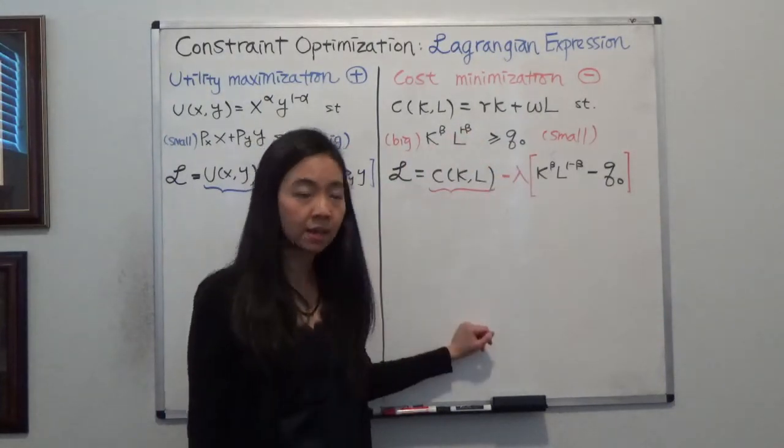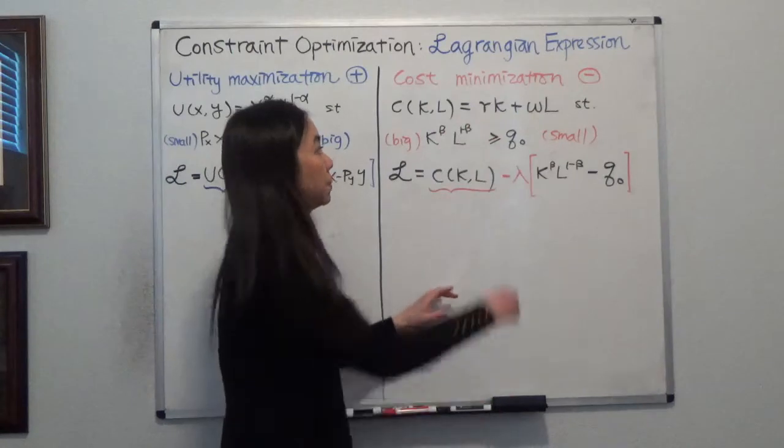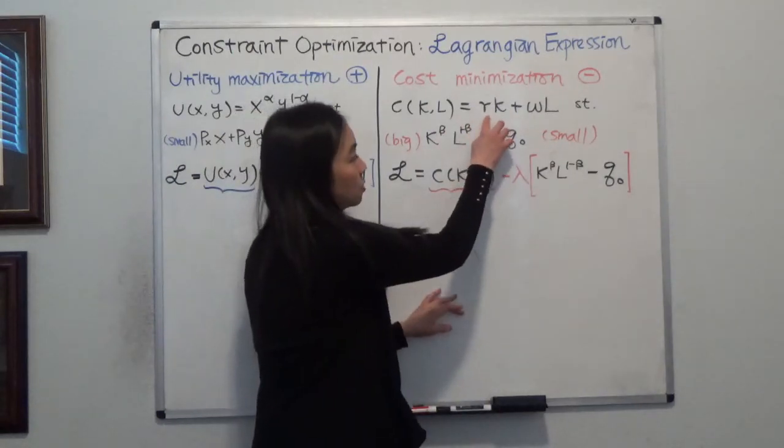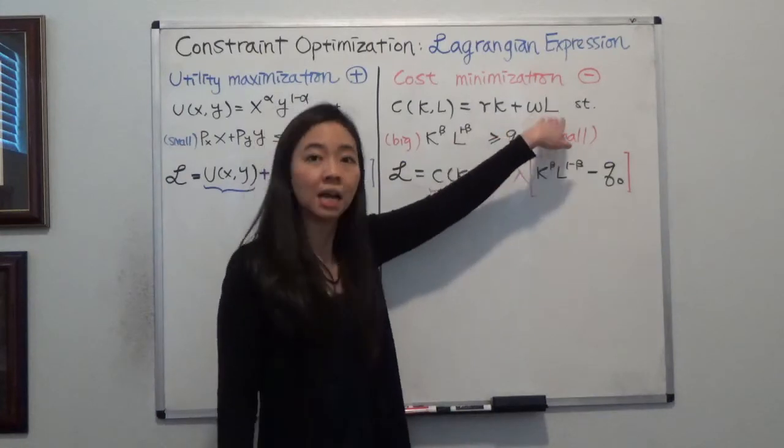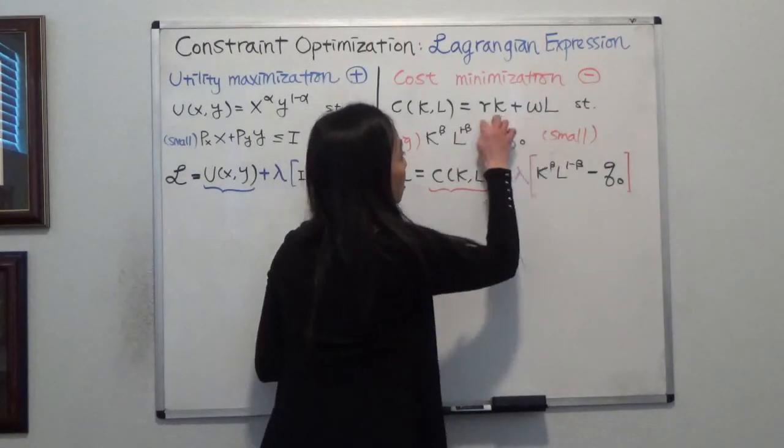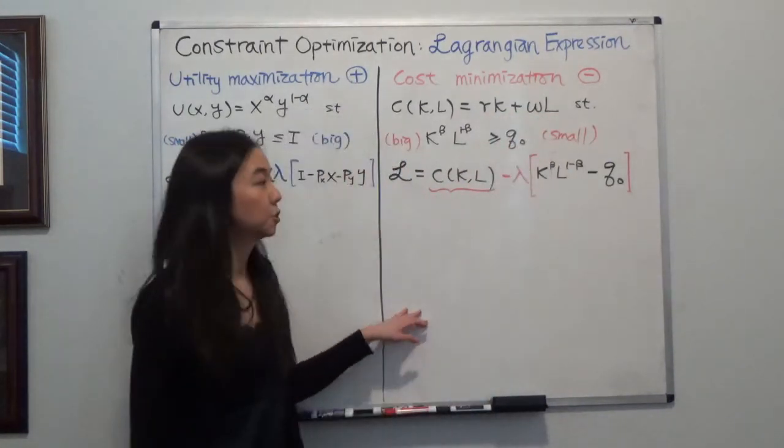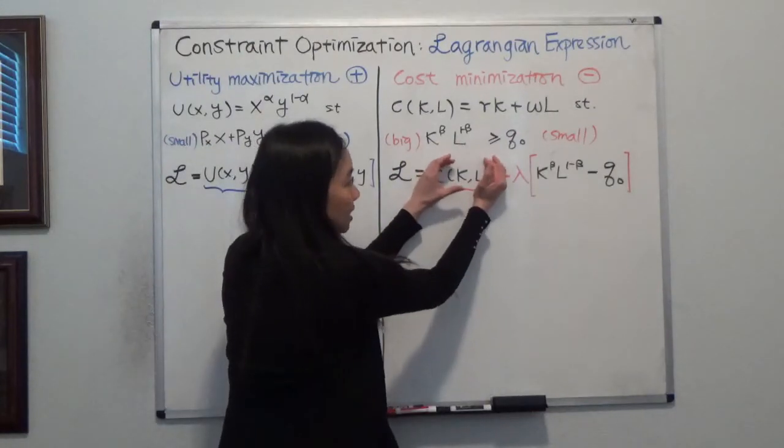And what you're trying to minimize is the cost. There will be R, that's the cost of capital, R times K, plus wage W times L. And that's the thing you are trying to minimize. So you put the thing you try to minimize here.